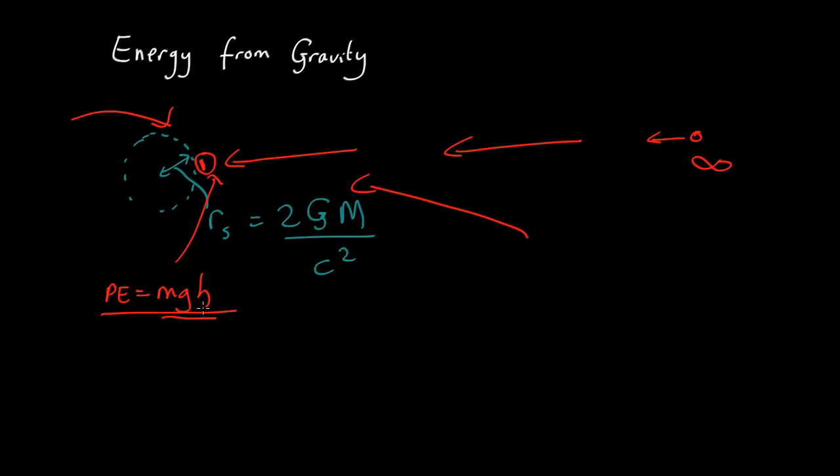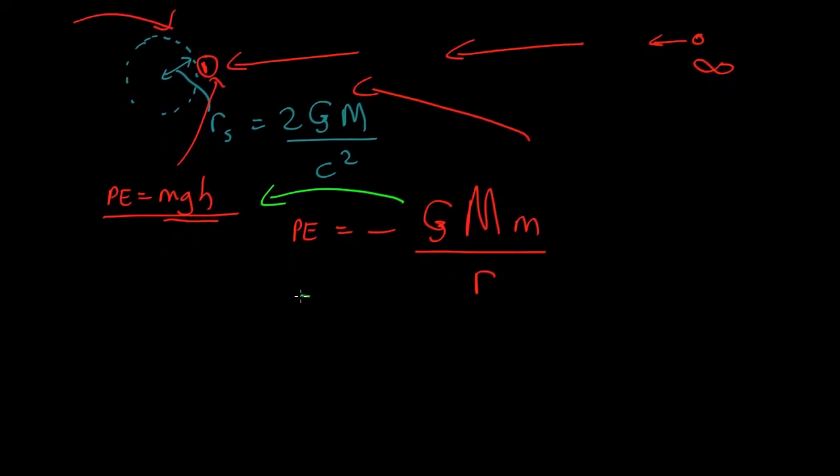But when you're moving around in space, you need to use the full form of the equation, which is the potential energy equals minus GMm of the black hole in this case, m of whatever it is that's moving around over the distance. And this, it turns out, acts like that when things are moving around a very small fraction of the radius, like within a room on Earth. But this is the form we'll need to use.